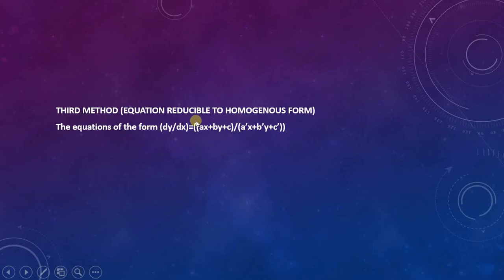Equation Reducible to Homogeneous Form. The equation of the form dy/dx is equal to (ax + by + c) divided by (a'x + b'y + c').